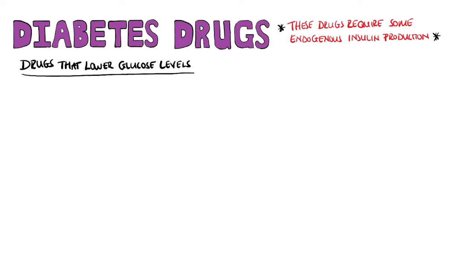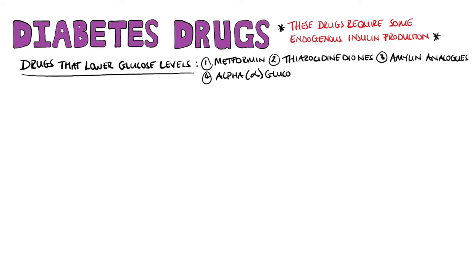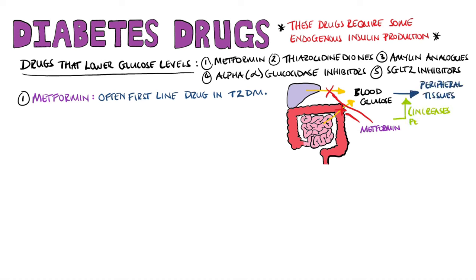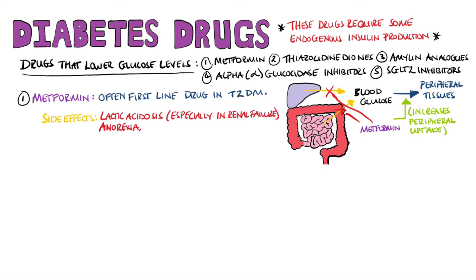Moving on to drugs that lower glucose levels, the most famous is metformin — the first-line oral agent for type 2 diabetics. Metformin decreases glucose production from the liver, decreases glucose absorption from the gut, and increases glucose uptake in the periphery. It inhibits glycerophosphate dehydrogenase and activates AMP-activated protein kinase. Side effects include lactic acidosis, since lactic acid can no longer enter the gluconeogenesis pathway — this is especially dangerous in renal failure as metformin is renally excreted. It can also cause anorexia, nausea, vomiting, and diarrhea, but does not cause hypoglycemia.